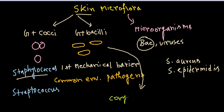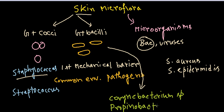So please focus on the spellings: Corynebacterium species and Propionibacterium species — these are the two major types of gram positive bacilli found on skin. Any kind of lesions, cuts, or wounds in our skin give these bacteria a possible chance to enter inside our tissue and cause infections.